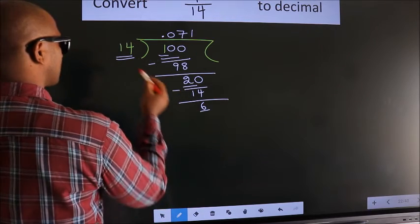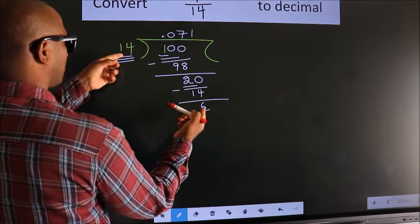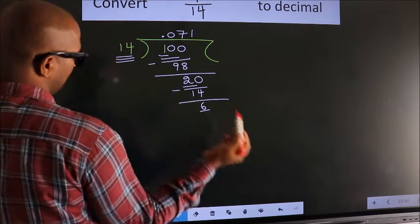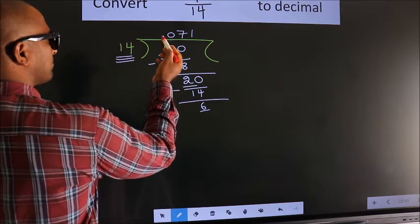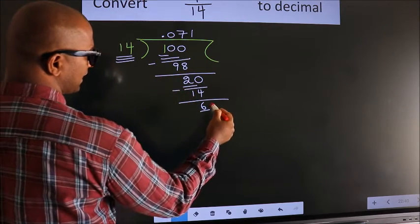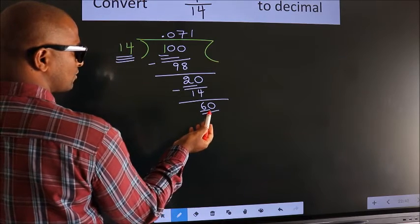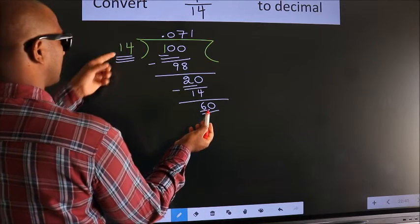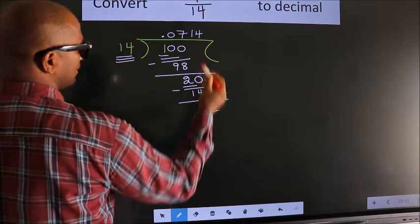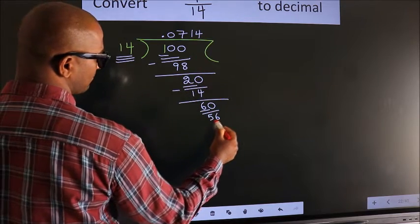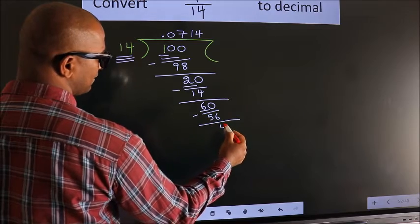Here we have 6, here 14. 6 is smaller than 14, and we already have the decimal, so we can directly take 0. So 60. A number close to 60 in the 14 table is 14 fours, 56. Now we subtract and we get 4.